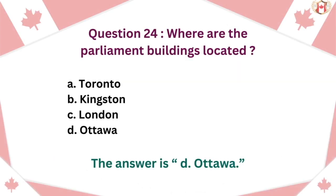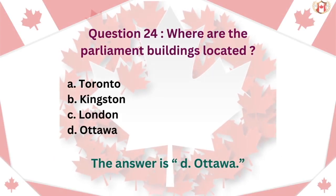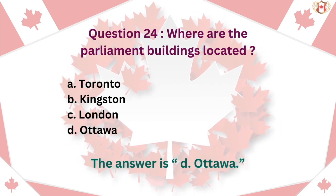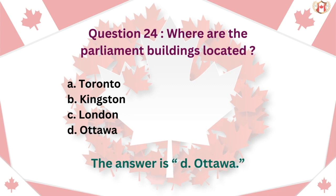Question 24: Where are the Parliament Buildings located? A. Toronto, B. Kingston, C. London, D. Ottawa. The answer is D. Ottawa.